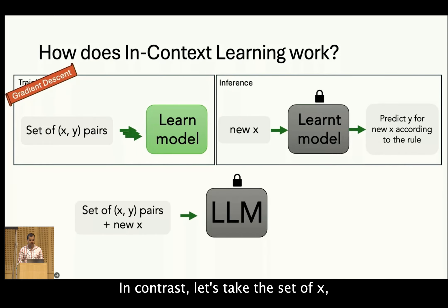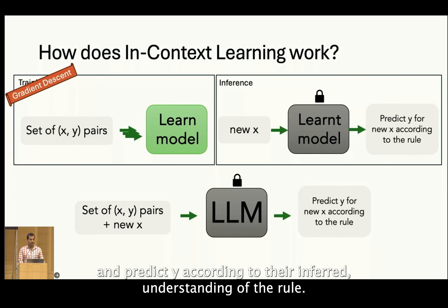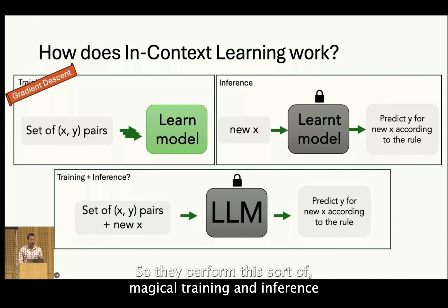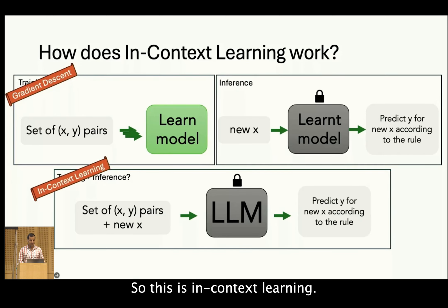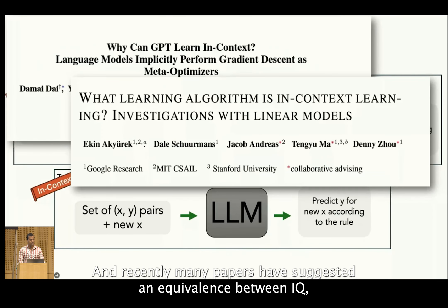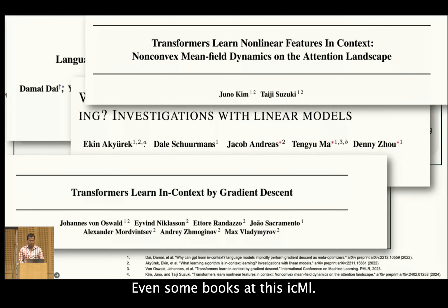In contrast, LLMs take the set of X-Y pairs as well as the new X, all as a single input, and predict Y according to their inferred understanding of the rule. So they perform this sort of magical training and inference all during test time without updating any parameters. This is in-context learning, and recently many papers have suggested an equivalence between ICL and implicit gradient descent inside language models — even some works at this ICML.